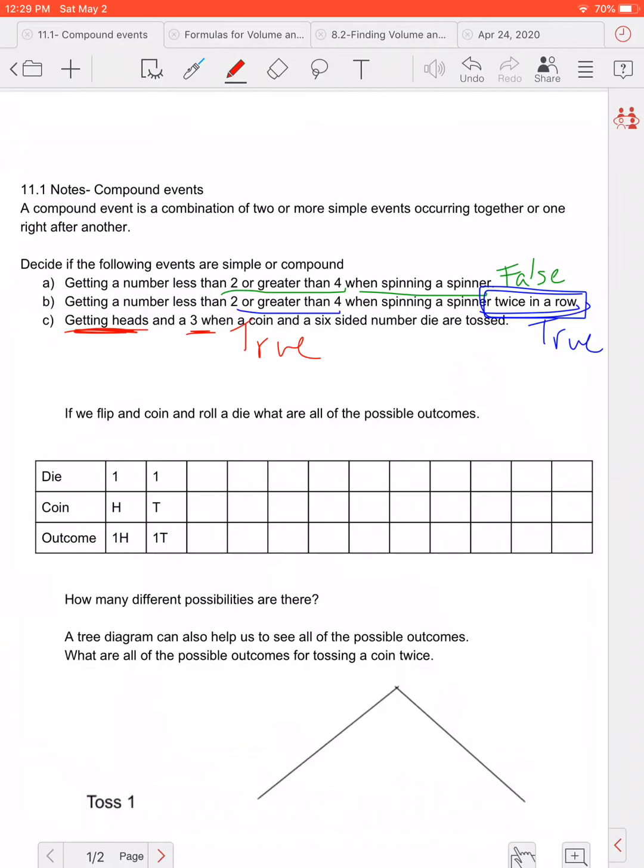Okay so if we were to sit here and flip a coin and roll a die we want to think about all the possible outcomes. So I could roll a one with heads which I have written here and we'll call that one H and I could roll a one with tails and that would be one T.